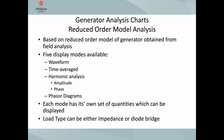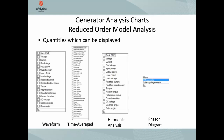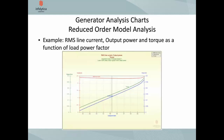There are quite a few different selection types available, including a complete set of loss calculations. Here's an example of a reduced order model analysis — we're looking at RMS line current, output power, and torque as a function of load power factor, varying that quantity to see how output power, torque, and RMS line current change.